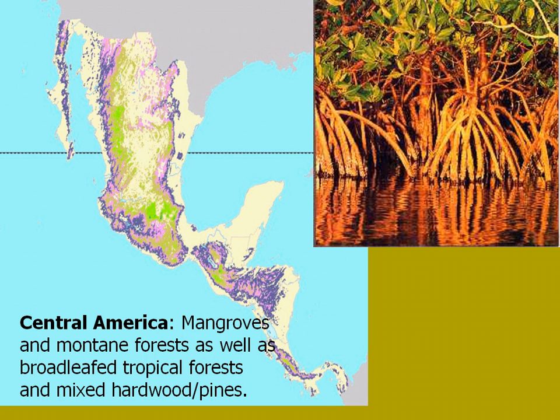In Central America, along the coast especially, you find a lot of mangrove forests. Once you get into the interior of Central America, the Rockies essentially stretch all the way down through Central America, and you end up with very high-altitude montane forests. As you creep down towards the coast, those turn into more broadleaf tropical forests and even some habitats where pines and mixed hardwood and pine occupy as well.